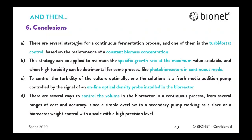Finally, some conclusions. There are several strategies for a continuous fermentation process, and one of them is the turbidostat, based on the maintenance of a constant biomass concentration. This strategy can be applied to maintain the specific growth rate at the maximum value available, and when high turbidity can be detrimental for some processes like photobioreactors in continuous mode. To control the turbidity optimally, one solution is a fresh media addition pump controlled by the signal of an online optical density probe installed in the bioreactor. There are several ways to control the volume in a continuous process across a range of cost and precision — from a simple overflow to a secondary pump working as a slave, or a bioreactor weight control with a scale offering high precision.